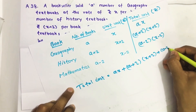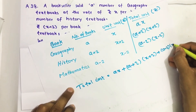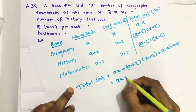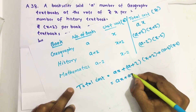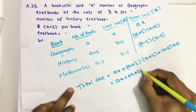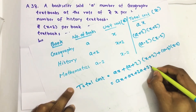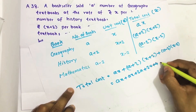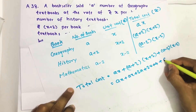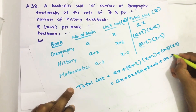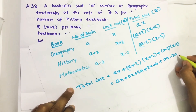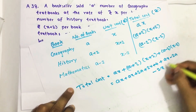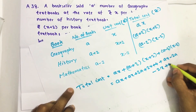Expanding: ax plus ax plus 2a plus 2x plus 4 plus ax minus 2a minus 2x minus 4. Collecting like terms, we get four from the constant terms.